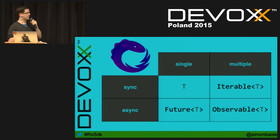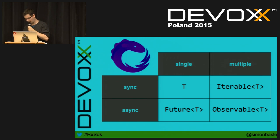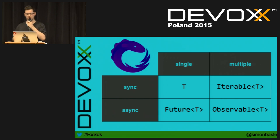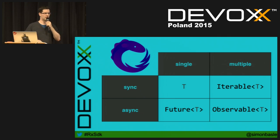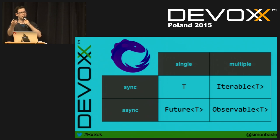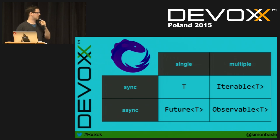RxJava deals with Observable of T. An Observable is like an asynchronous stream — it's kind of the dual of Iterable/Iterator, but push-based. You subscribe and get notified of new items coming into the stream. With collections, it's a pull model — you decide when you want the next item. With Observable in Rx, you are notified.